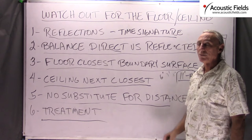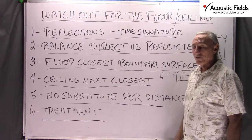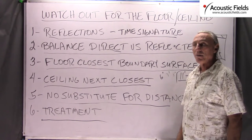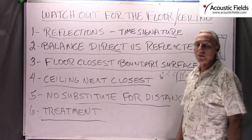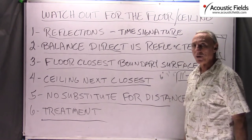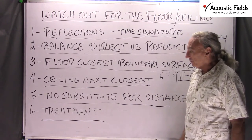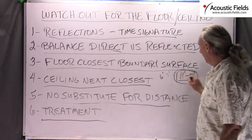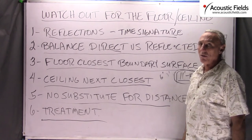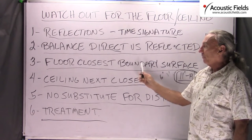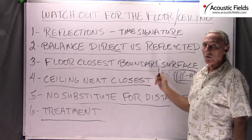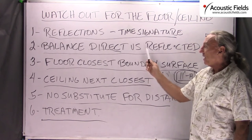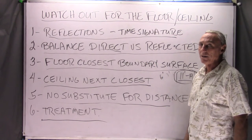I've done it in rooms as low as eight and a half feet. You sit in the chair and listen, and when you ask people how far away the ceiling is, they always guess 11, 12, 13 feet — because I've used diffusion and absorption in the right way. Treatment is critical. There is no substitute for distance. Get that 11 to 14 foot distance going for the ceiling. Realize that the floor and the ceiling are your closest surfaces, so those are the reflections you have to treat the most. It's always a balance between direct and reflected energy.